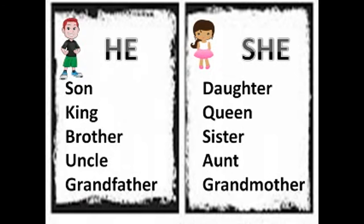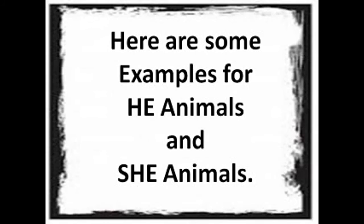Son is he, Daughter is she. King is he, Queen is she. Brother is he, Sister is she. Uncle is he, Aunt is she. Grandfather is he, Grandmother is she. Here are some examples for he animals and she animals.